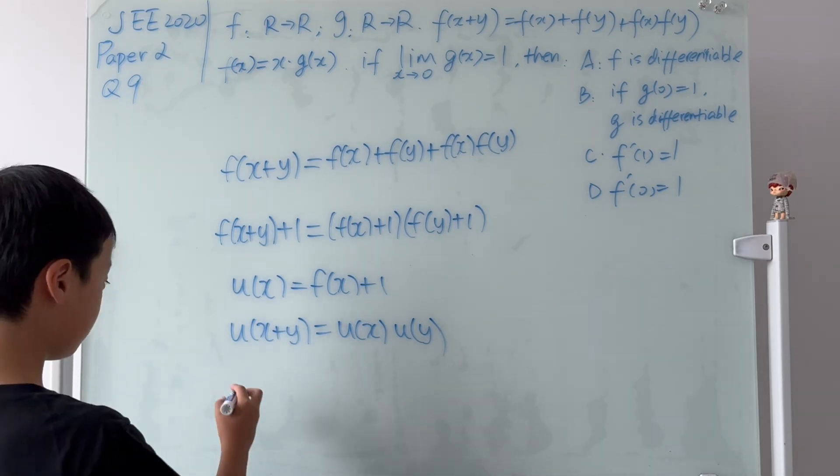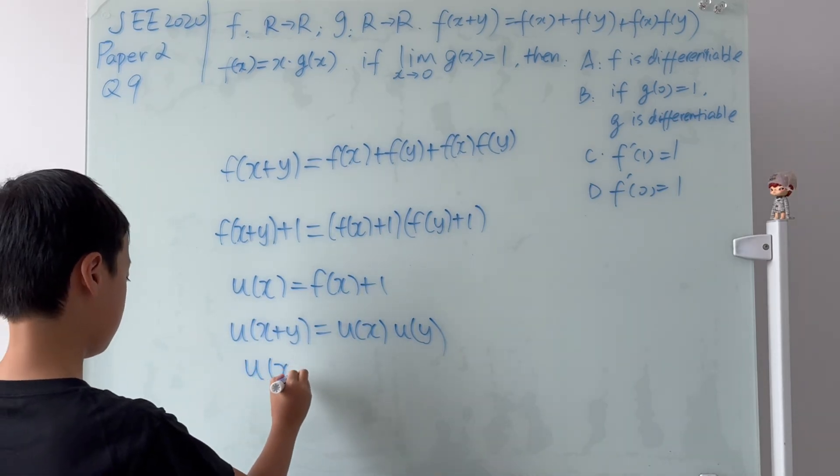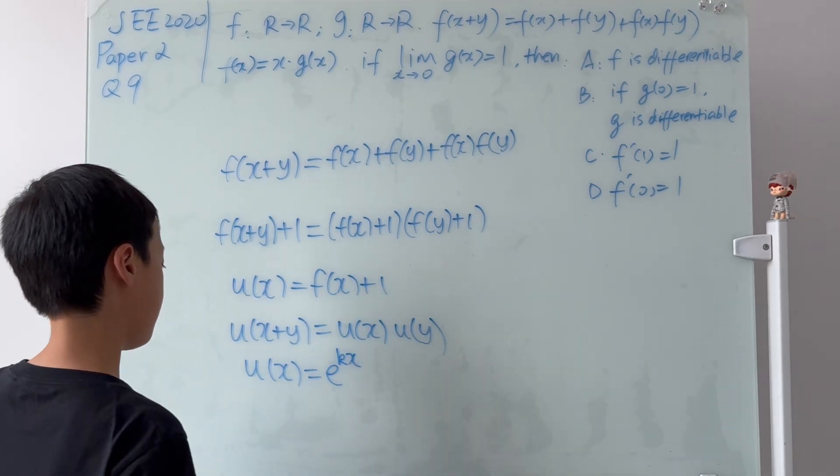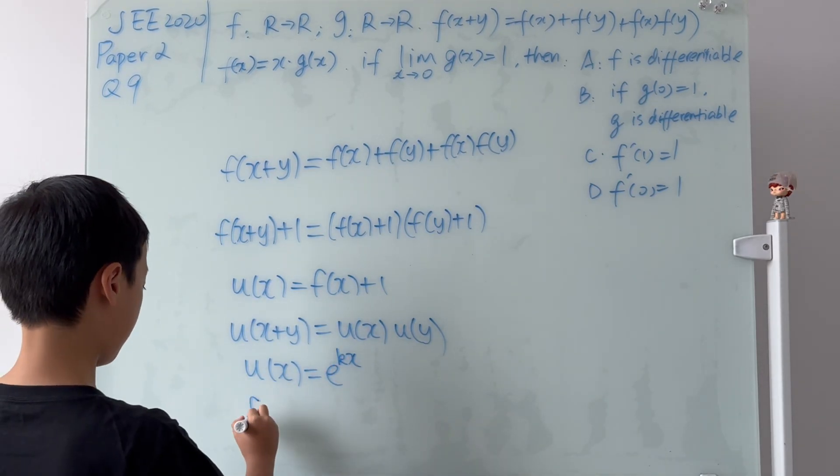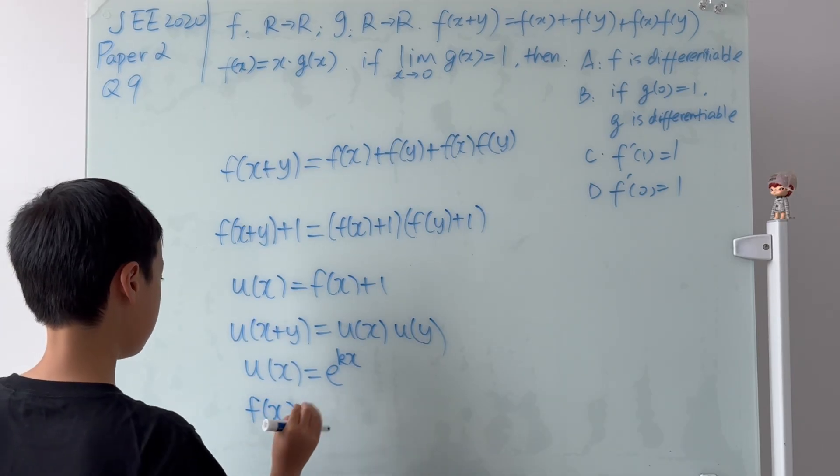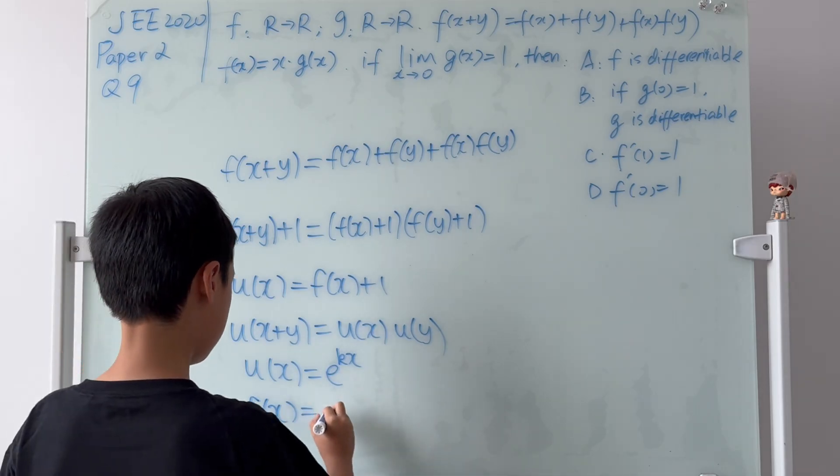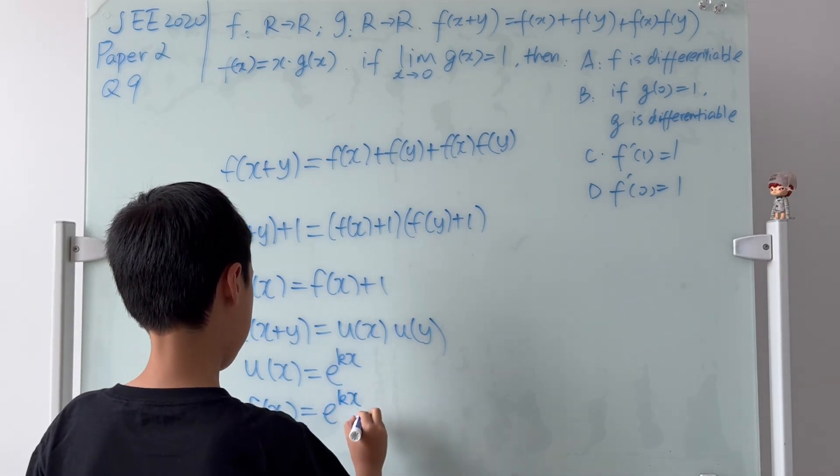So that's exactly what I'm going to do. And in most functional equations, we usually get the answer by guessing. And that's basically what I'm doing here. I'm guessing the exponential function e^(kx) as a guess. And it works. So we know that u(x) equals e^(kx). And from here, we know that f(x) will be u(x) - 1. So it's just e^(kx) - 1.